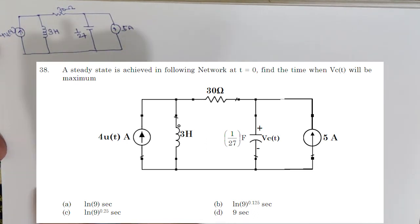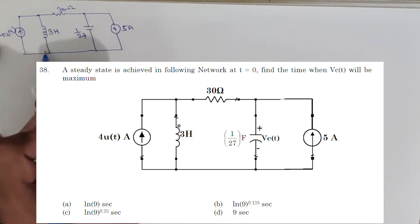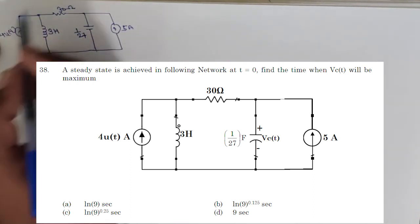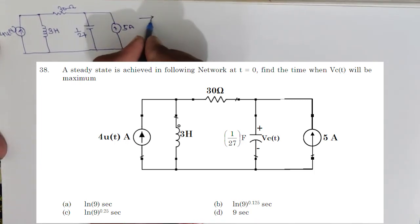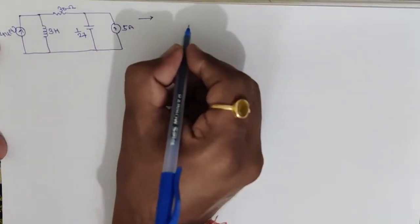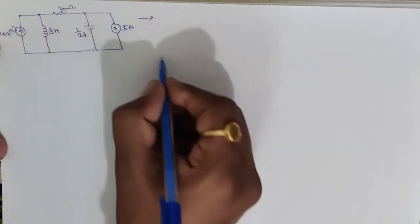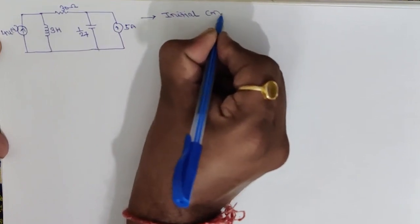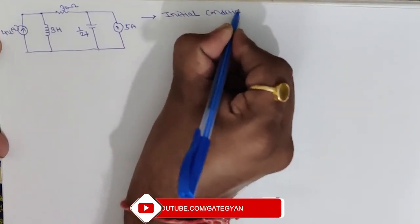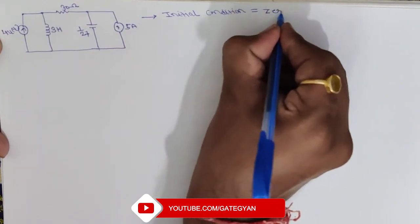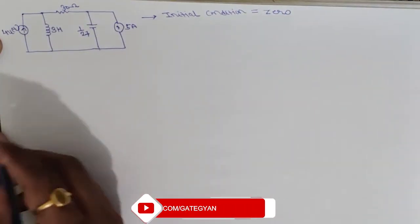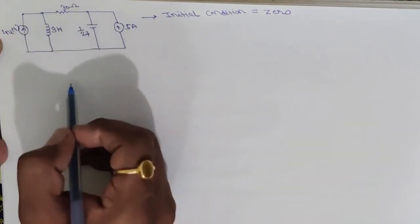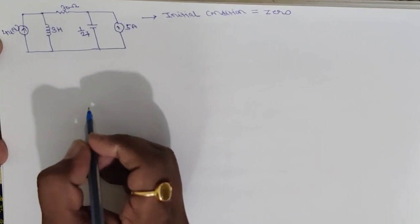A 3H inductor, 30 ohm resistor, and a 1/27 farad capacitor are connected in this circuit. In this question we are given that steady state is achieved in this network. Steady state achieved means the initial conditions of this network are zero.